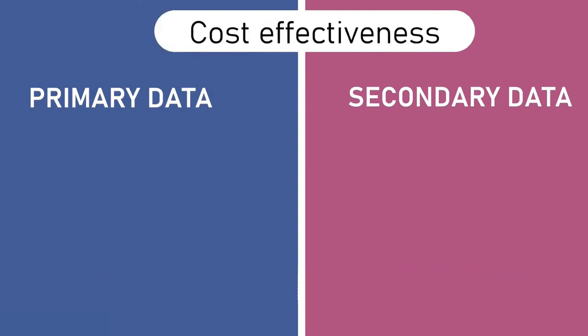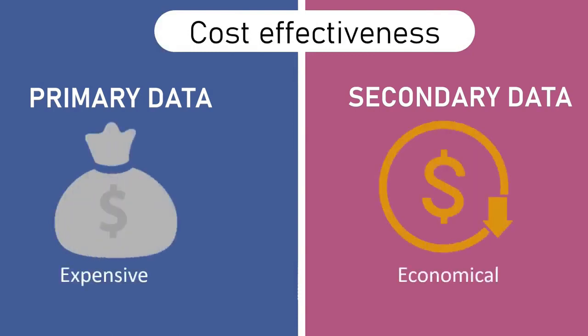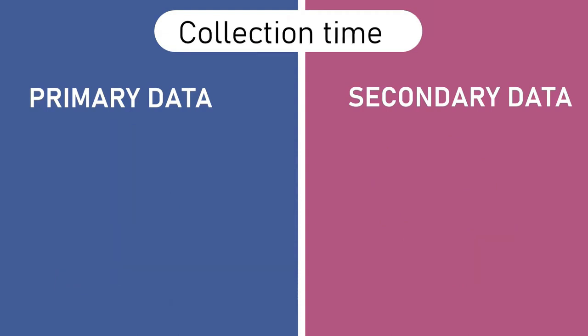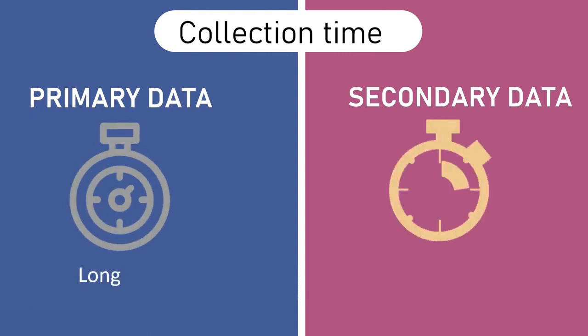Cost effectiveness: Primary data is very expensive, while secondary data is economical. Collection time: Collection of primary data takes a long time, whereas collection of secondary data takes a short time.